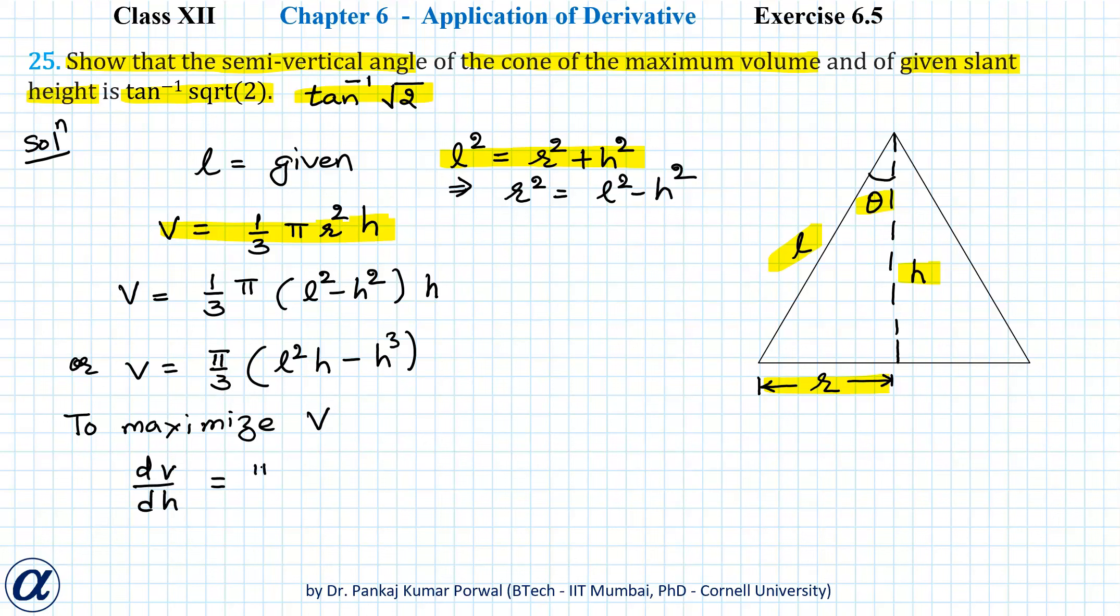That will be π by 3. Here l squared will be treated as constant, so the derivative will be l squared minus 3h squared. Let me put the value of l squared from this equation, so I get π by 3 times (r squared plus h squared minus 3h squared).